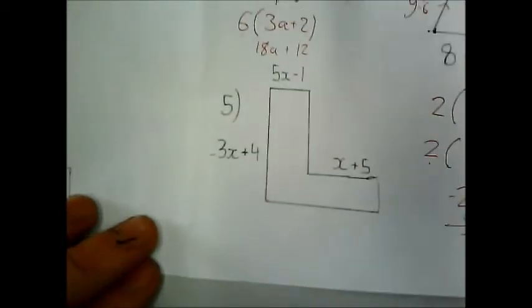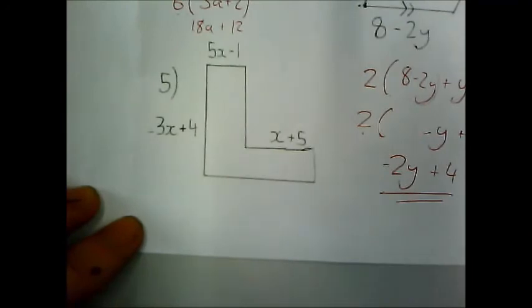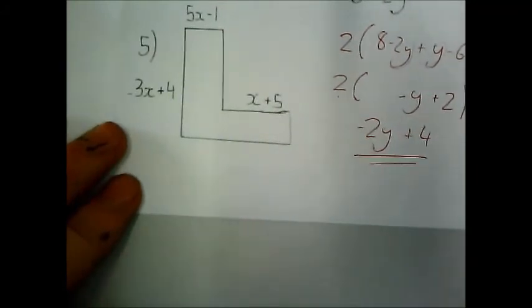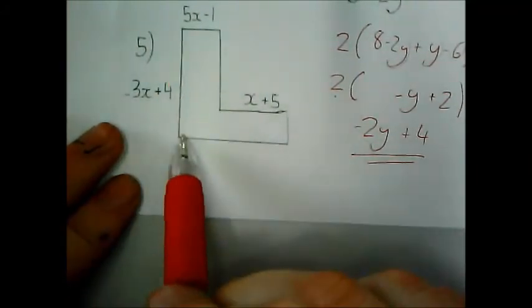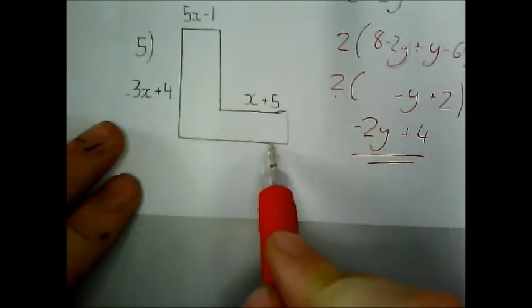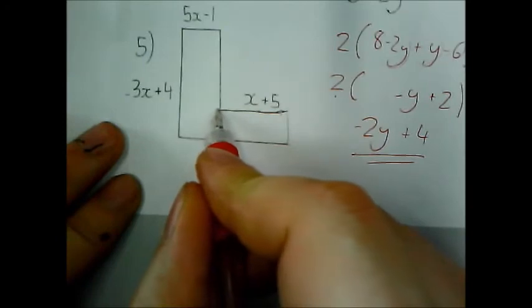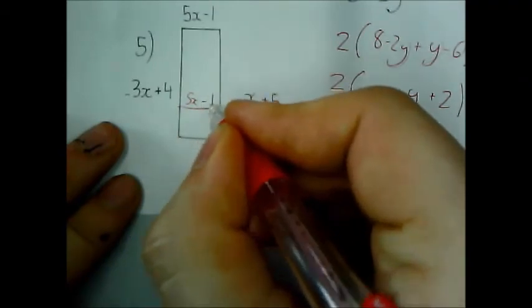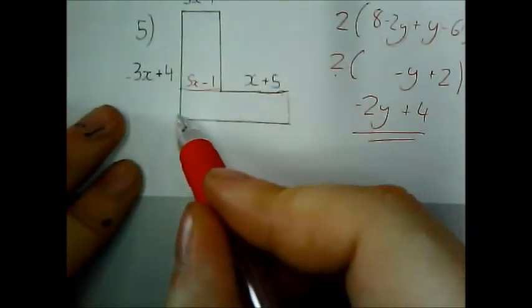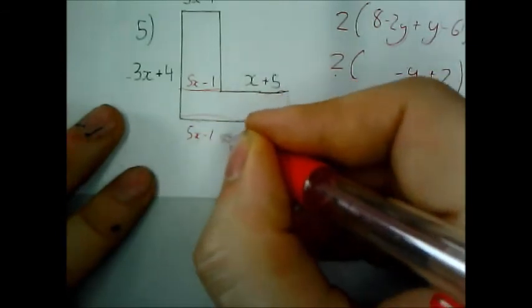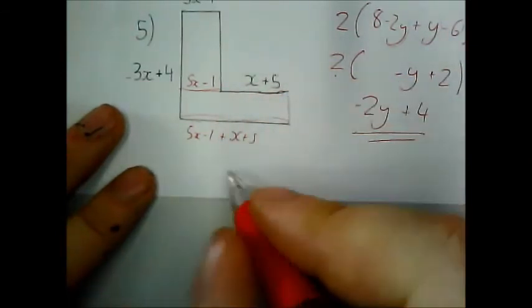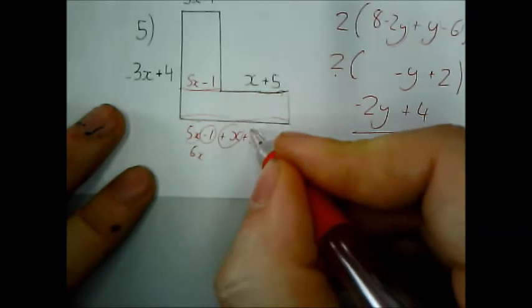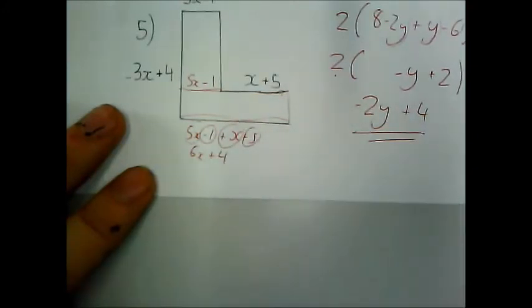And finally the last question. Question 5. So. Here you can do this a couple of ways. We'll do the slow and steady method first. So. This is 3x plus 4. And this side. Is this bit. Plus this bit. And that bit there is 5x minus 1. OK. So to get this side. It's going to be 5x minus 1. Plus x plus 5. So in connecting like terms. 5x plus x. Is 6x. Negative 1. And a positive 5. Is going to be positive 4.